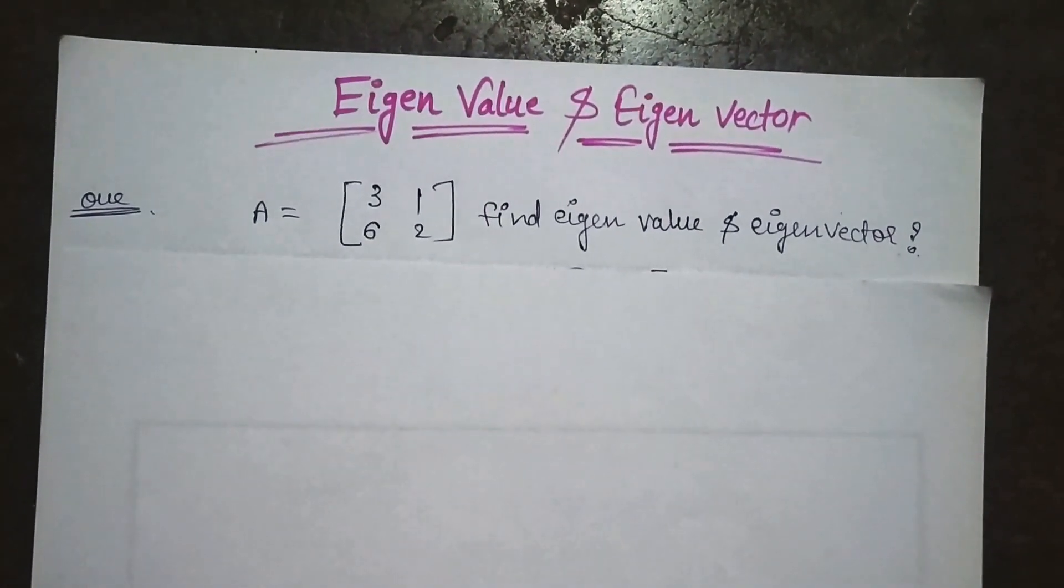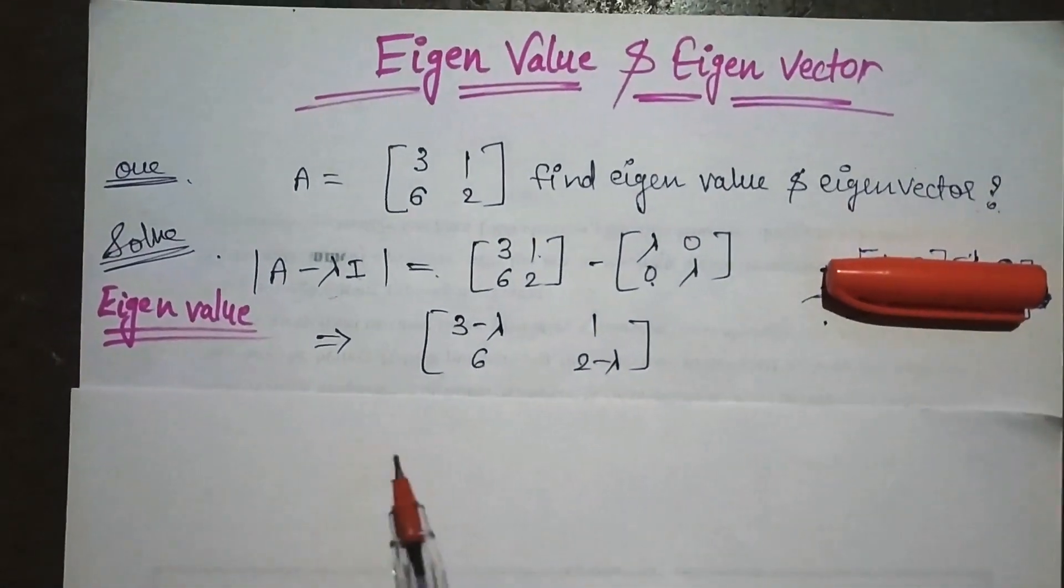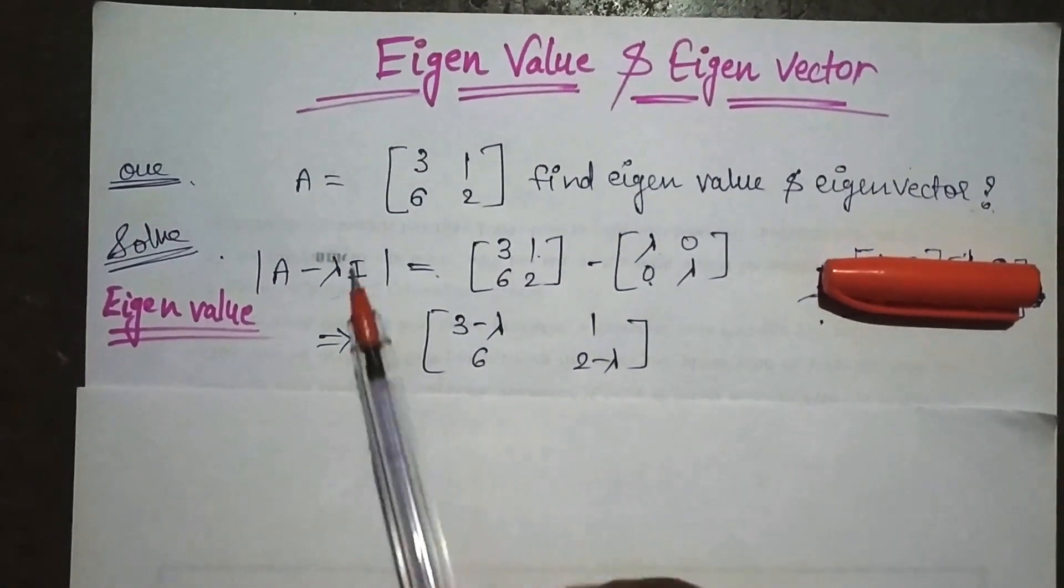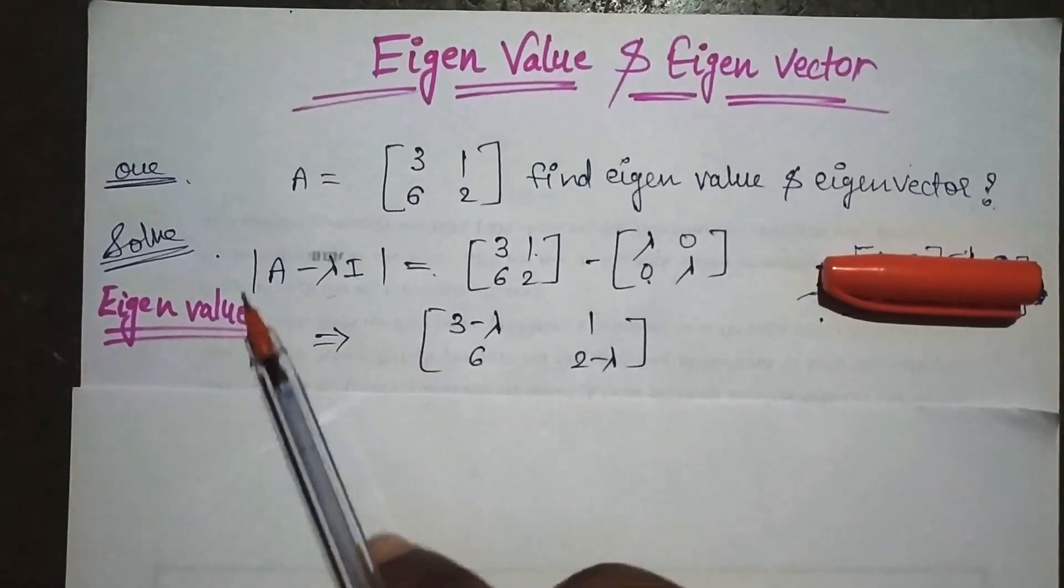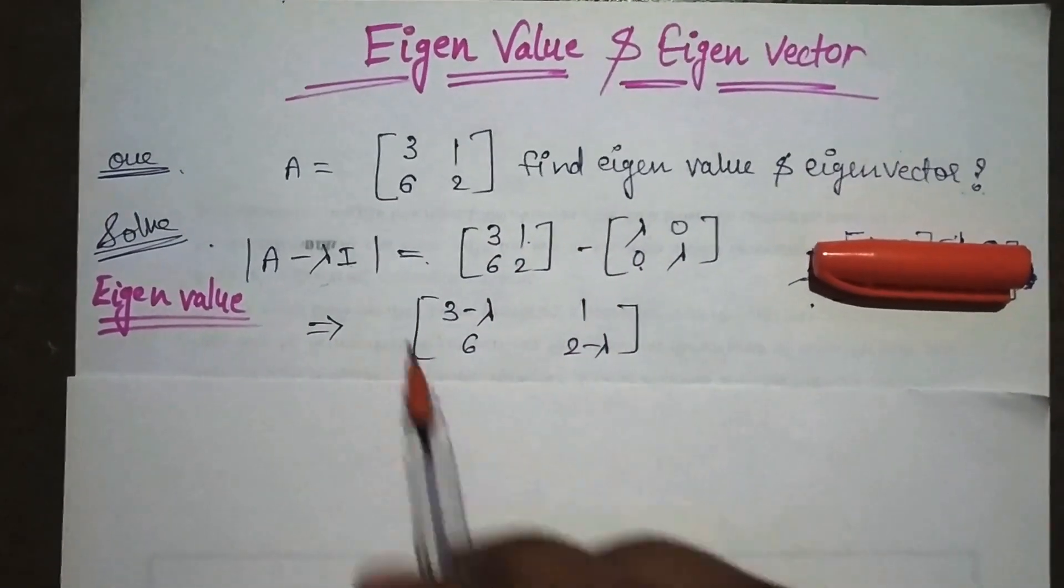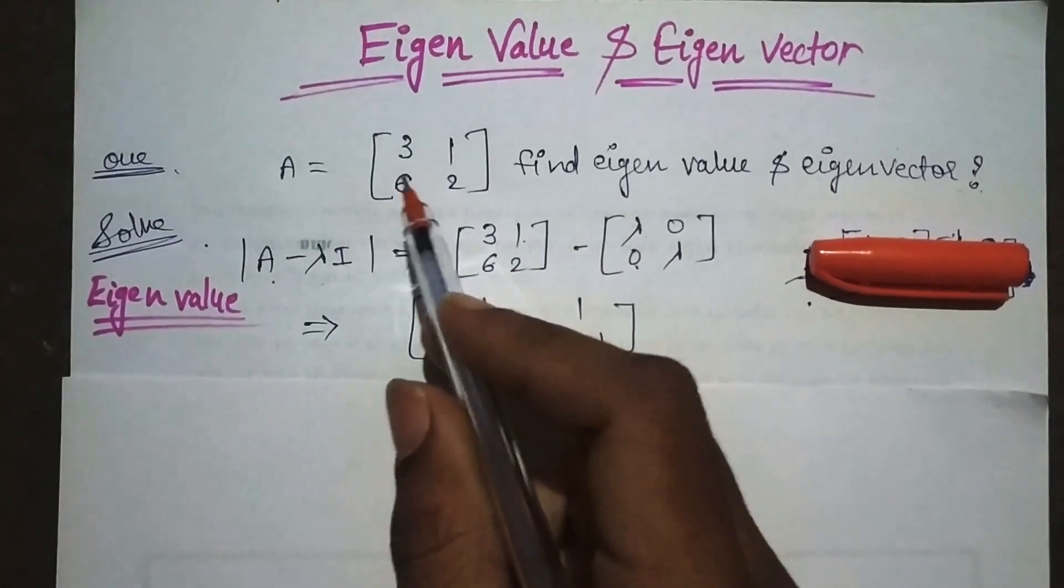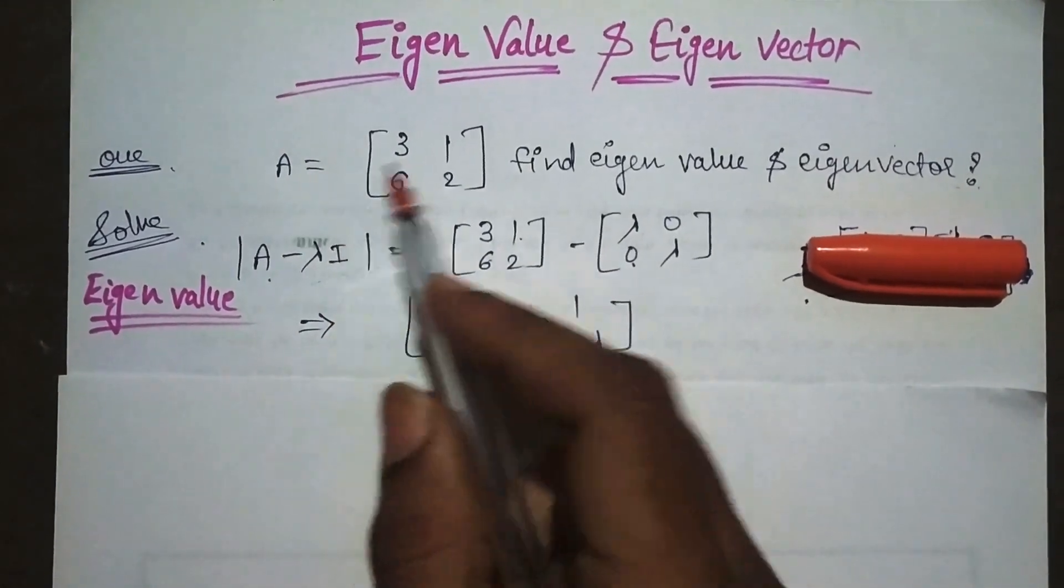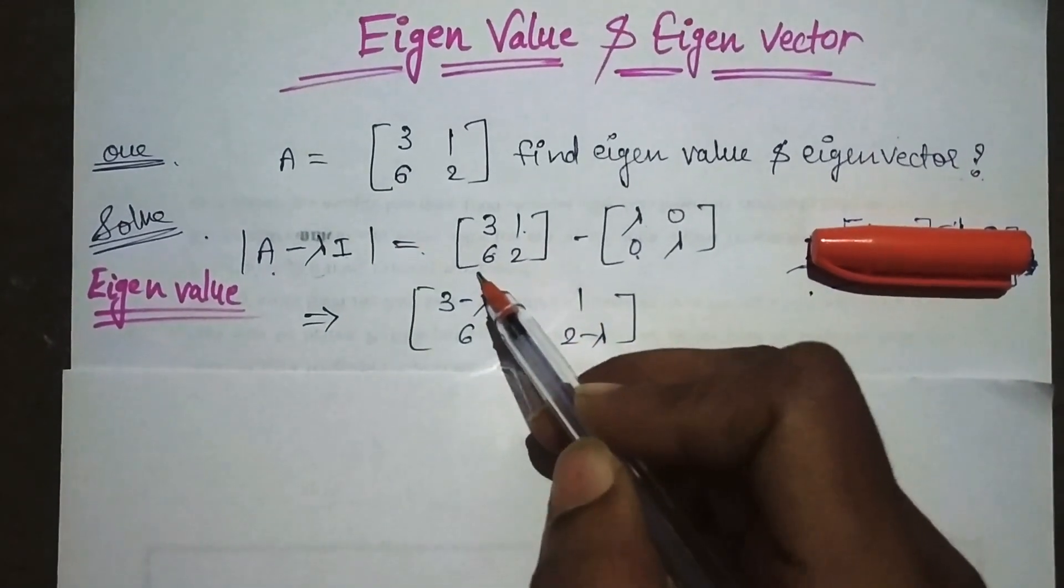This is your question: find eigenvalue and eigenvector for this matrix. First, we will find the eigenvalue using the format |A - λI| = 0, where A represents this matrix.